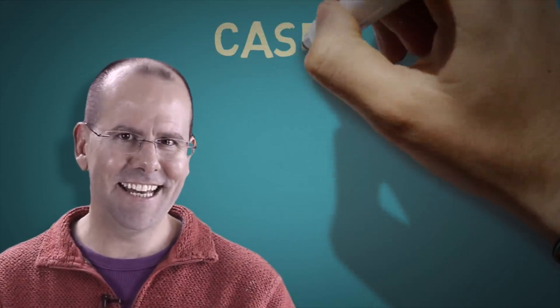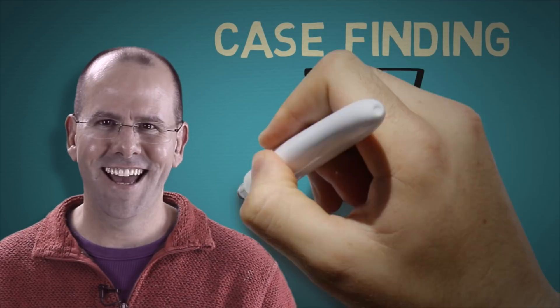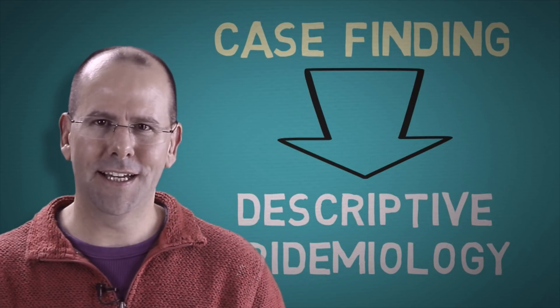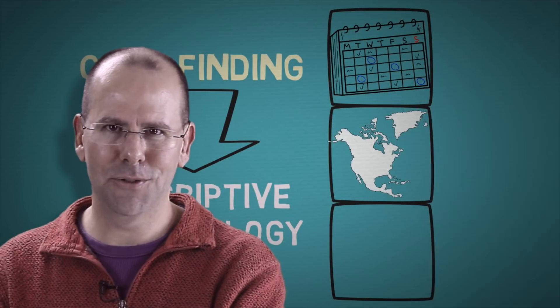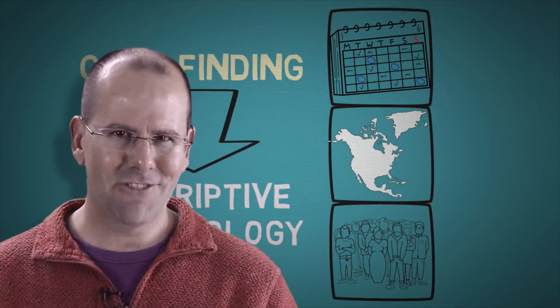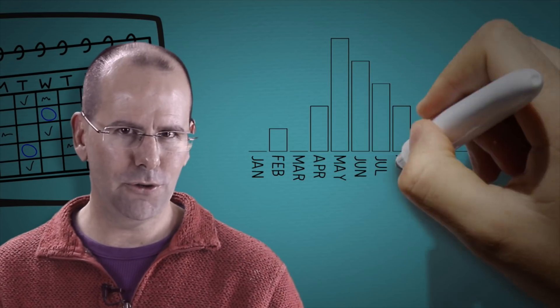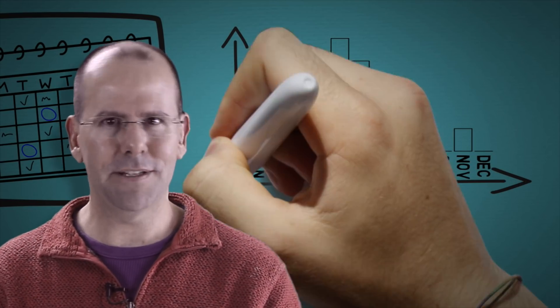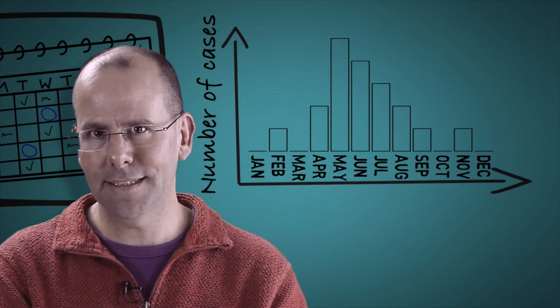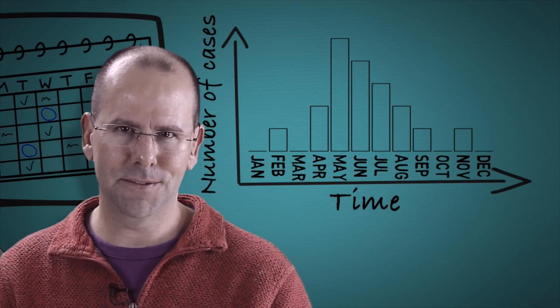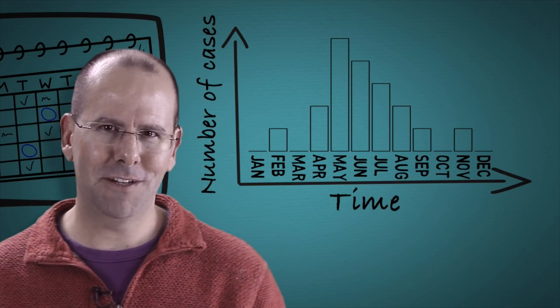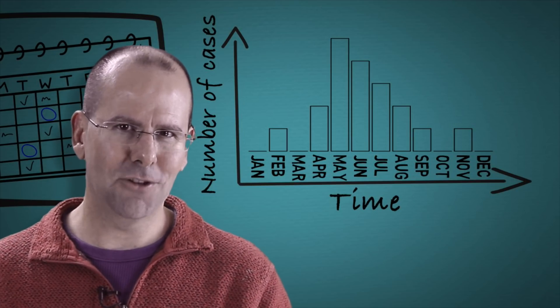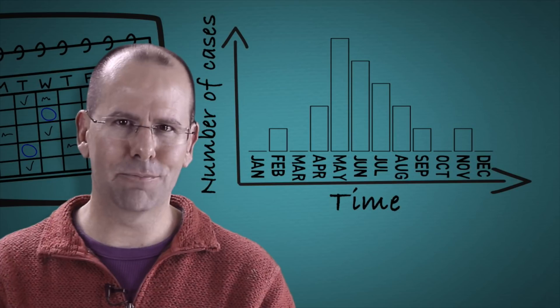Next is case finding and descriptive epidemiology. As we identify cases, we want to describe them in terms of time, place, and person — meaning personal characteristics like age, gender, occupation, ethnicity, et cetera. Describing the outbreak in terms of time is usually done by drawing an epidemiological curve, or epi-curve, which has the number of cases on the y-axis and time on the x-axis. The shape of the epi-curve can tell us a lot about the mode of transmission and the progression of the outbreak itself.